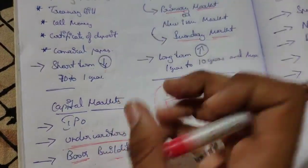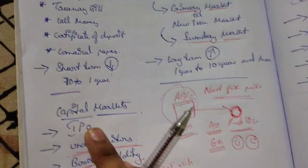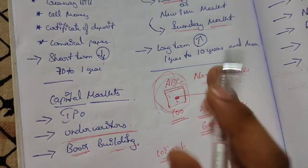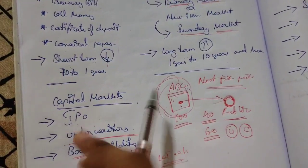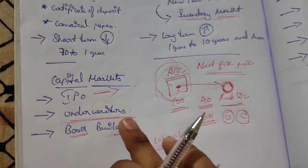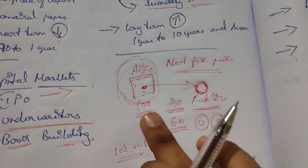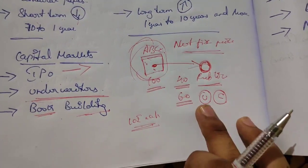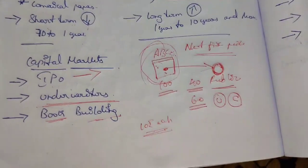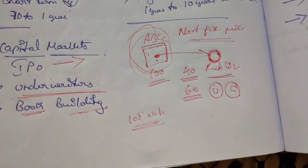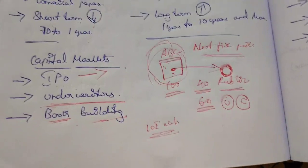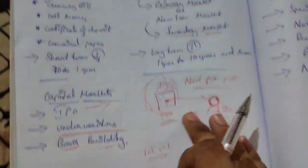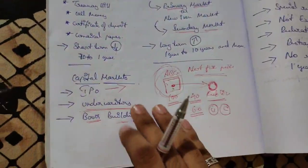In capital markets, IPO means initial public offering — a new company like ABC, new to the market without goodwill, issues shares through this process. Underwriters subscribe the remaining unsubscribed shares for a commission — for example, if 100% shares are issued but only 50% are subscribed, the other 50-60% are taken by underwriters. Book building is where prices are fixed by the public, not the company, because the company's goodwill is low.